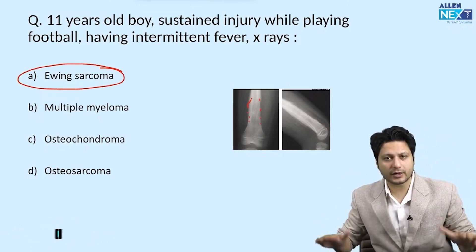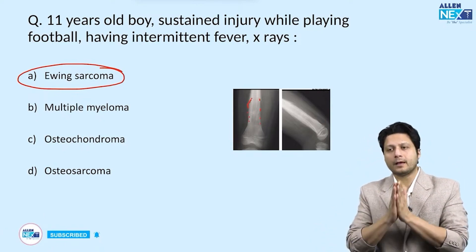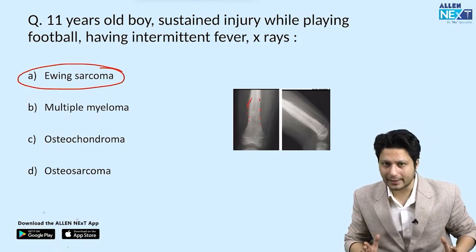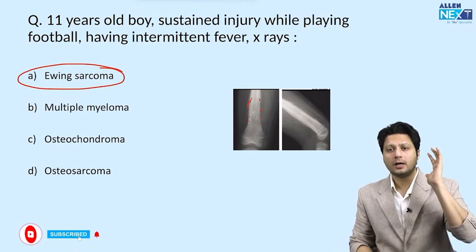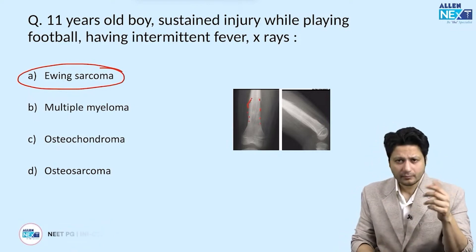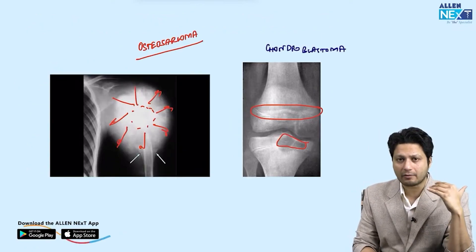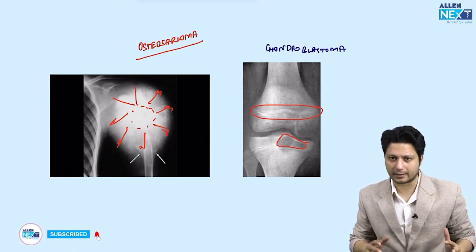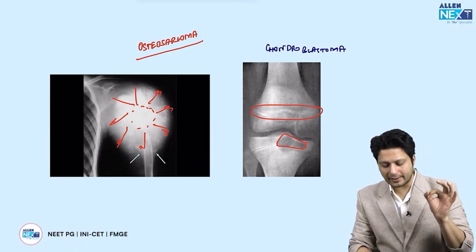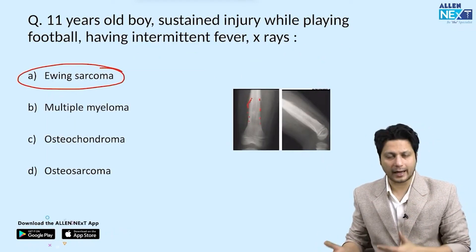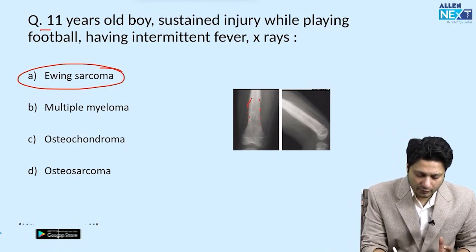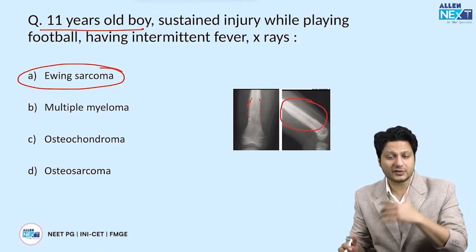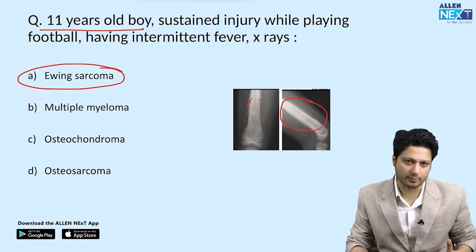For tumor identification questions, most times a benign tumor is given for identification. If a malignant tumor is asked, it will be osteosarcoma — with clear X-ray features leaving no confusion — or Ewing sarcoma. In Ewing sarcoma there is diaphyseal involvement, the patient is on the younger side, and there is a periosteal reaction in the form of an onion-peel appearance, typically in the femur or tibia.